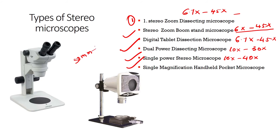The last type is the single magnification handheld pocket microscope, which is a single-powered handheld stereo microscope with two magnification powers and no built-in light.